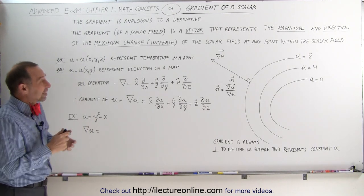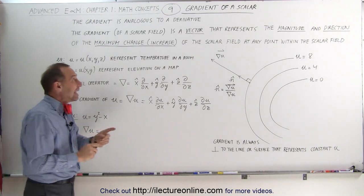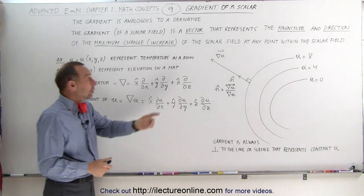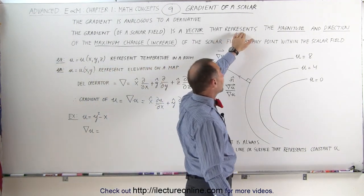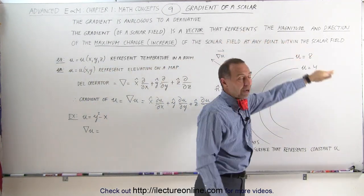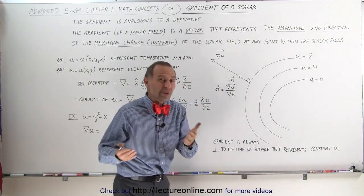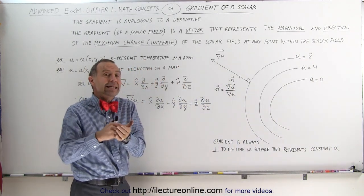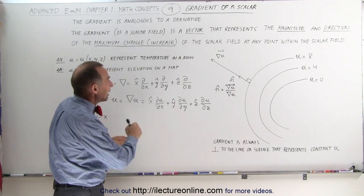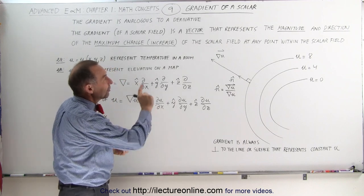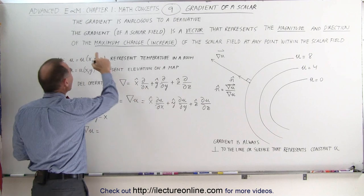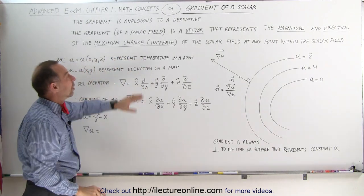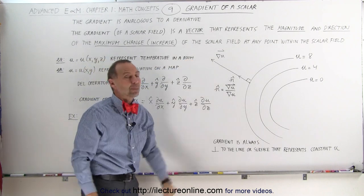The gradient of a scalar field is a vector in itself. So when we take the gradient, we end up with a vector, and that vector will represent the magnitude and direction of the maximum change — in particular, the maximum increase — of the scalar field at any point within that field.